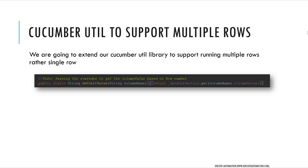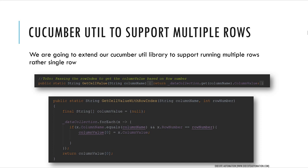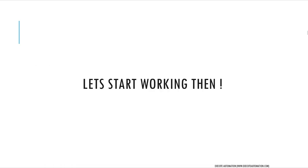There were questions from people asking for this feature in our framework, so I've added it. The new method is getCellValueWithRowIndex, where we pass both the column name and the row number. This time I'm using arrow functions in the forEach, and since we've upgraded from Java 1.5 to Java 9, there are many new features available — like arrow functions — similar to C#. We iterate through the column name and row number to get the column value out.